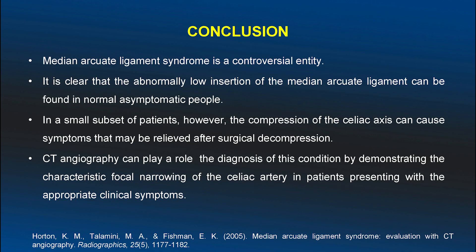In conclusion, median arcuate ligament syndrome is a controversial entity. It is clear that abnormal low insertion of the median arcuate ligament can be found in normal asymptomatic individuals; only in a small subset does compression of the celiac axis cause symptoms. These patients will get symptomatic relief after surgical decompression. CT angiogram plays an important role in clinching the diagnosis, especially sagittal reconstructed images to demonstrate the median arcuate ligament and the characteristic hooked appearance of the celiac axis.